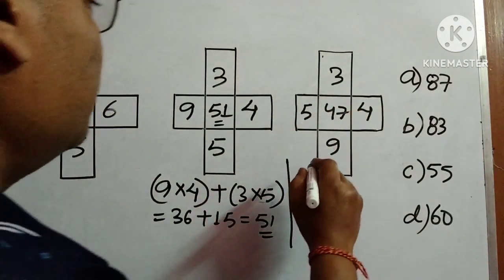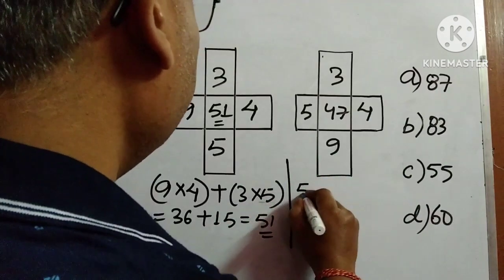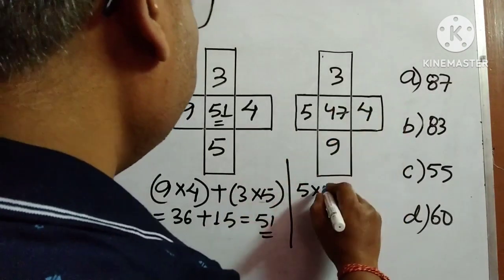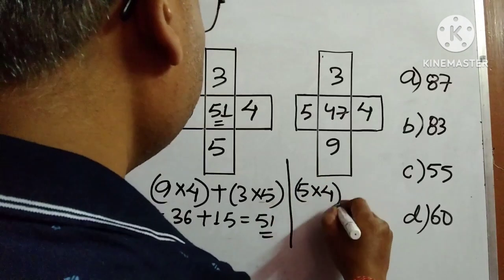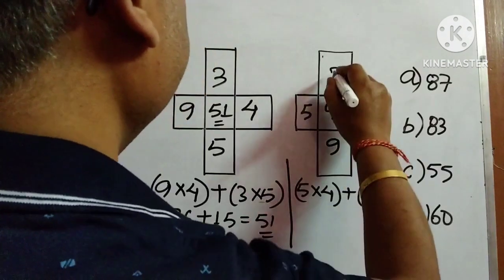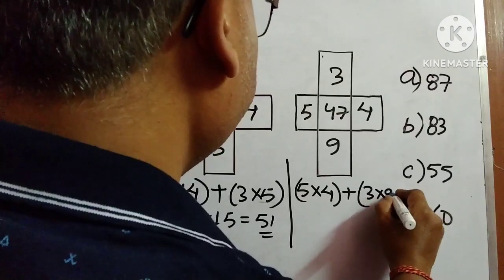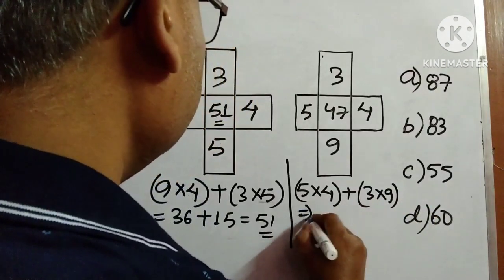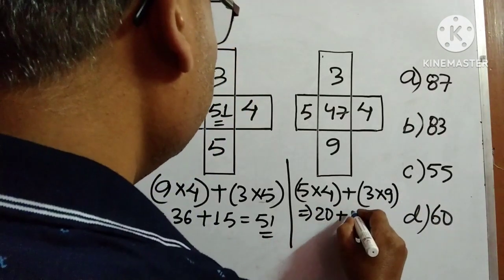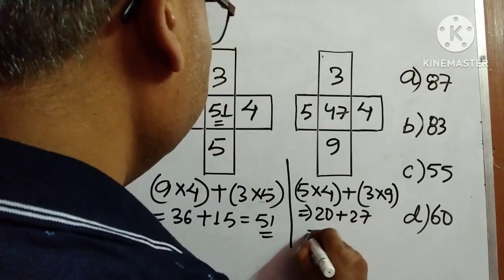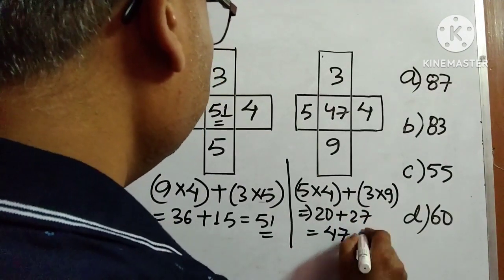We will check here. So what we will do, we will multiply these two numbers, 5 into 4, and then add and multiply this to 3 into 9. So this is 20 plus 27, which is equal to 47, which is given.